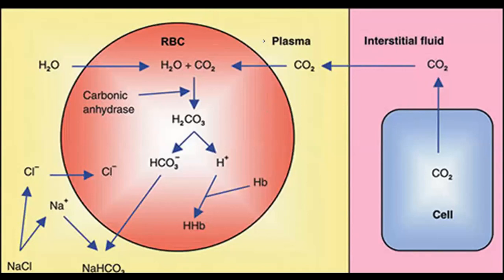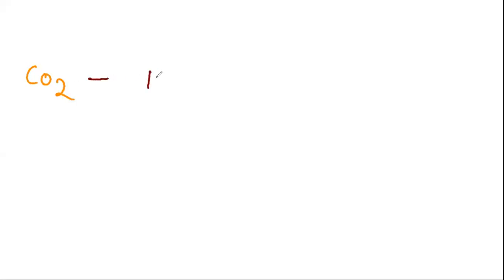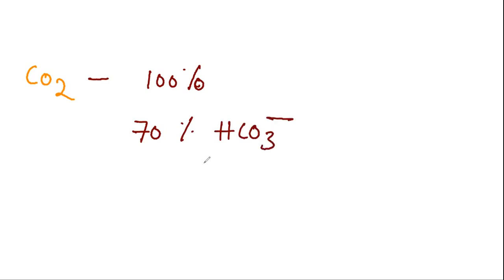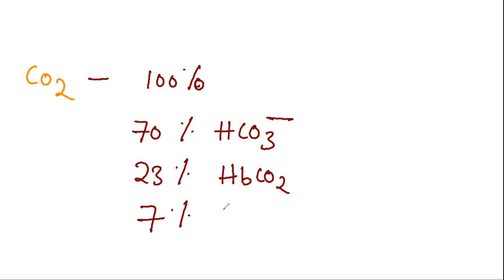The Chloride Shift or Hamburger's Phenomenon relates to how carbon dioxide is transported in the blood. Of the total 100% carbon dioxide in blood, 70% is transported as bicarbonate ions (HCO3-), 23% is transported as carbamino-hemoglobin (HbCO2), and 7% is dissolved in plasma.